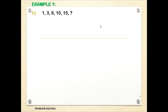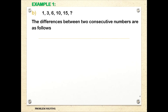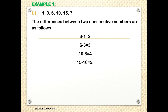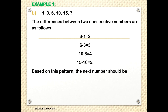Now for letter B, the differences between two consecutive numbers are as follows: 3 minus 1 is 2, 6 minus 3 is 3, 10 minus 6 is 4, 15 minus 10 is 5. The differences keep increasing by 1. So based on this pattern, the next number x minus 15 must equal 6, meaning x must be 21.